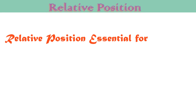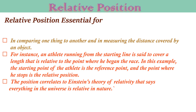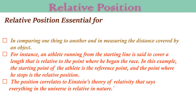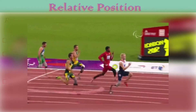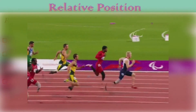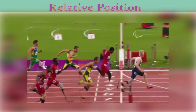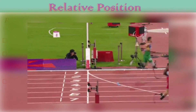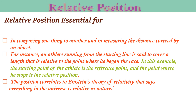Relative position is essential in comparing one thing to another and measuring the distance covered by an object. For instance, an athlete running from the starting line is said to cover a length that is relative to the point where he began the race. In this example, the starting point of the athlete is the reference point and where he stops is the relative position.